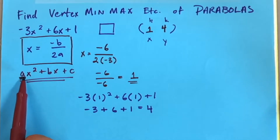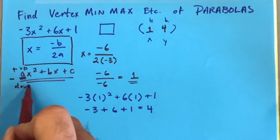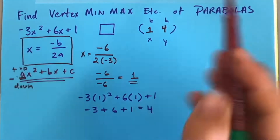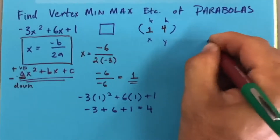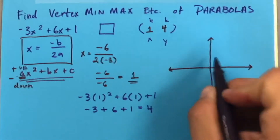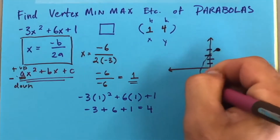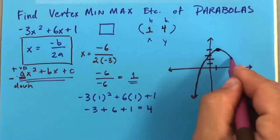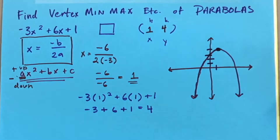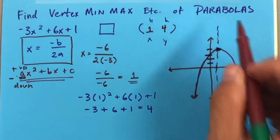The value of a tells us the direction of the parabola — positive a means it opens up, negative a means it opens down. In this case, a is negative, so the graph faces down. The vertex is the point at which the graph reflects, representing the maximum or minimum. It also gives us the axis of symmetry, where the graph reflects at the x-value.